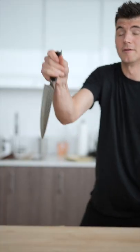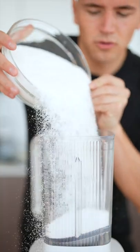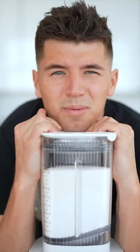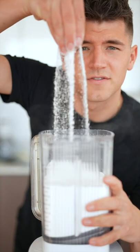Let's make salt-cured egg yolks. Add one pound of kosher salt and one pound of sugar to a blender. Blend to break things up a little bit. It should now be a nice fine powder.